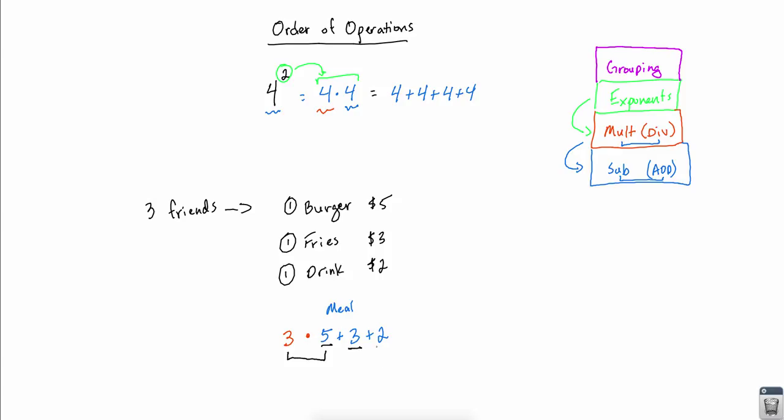So this is where grouping comes in. We can use parentheses to wrap up that meal and ensure that we add up the total for that meal first. In which case, now we'll get three meals, and each meal will be $10 (5 plus 3 plus 2) for a total of $30 for all three friends to eat their meal.